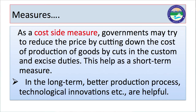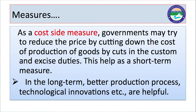Another measure is from the cost side. The government may reduce prices by cutting the cost of production through reductions in customs duty, excise duty, and other taxes, so that the cost of production decreases and prices ultimately come down. This is a short-term arrangement. In the long term, through better production processes and new technological innovation, the government can reduce the cost of production of goods and services and thus control inflation.